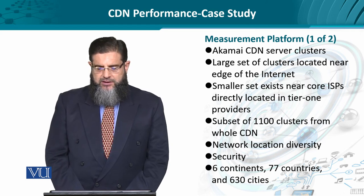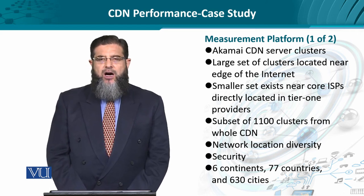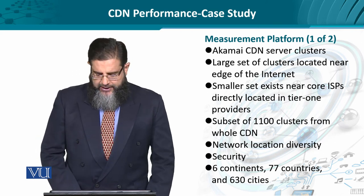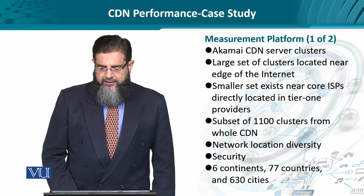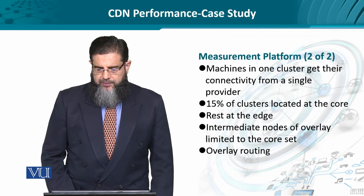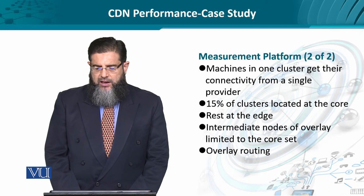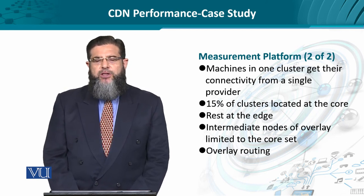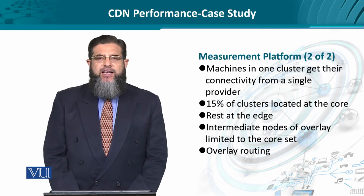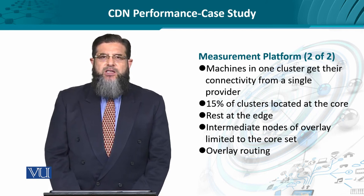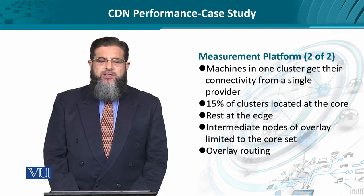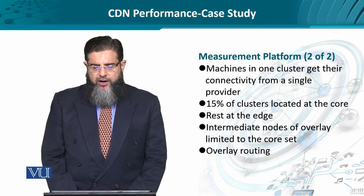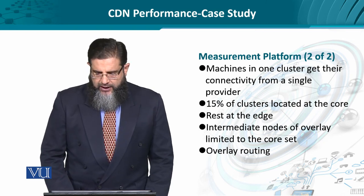There are 1,100 clusters in total. Around 15% of them are placed near the core servers and around 85% are near the edge servers. The intermediate nodes forward the traffic from the core servers, since most edge or origin servers are placed on the core ISP, and overlay routing is used to deliver the content to the clients.